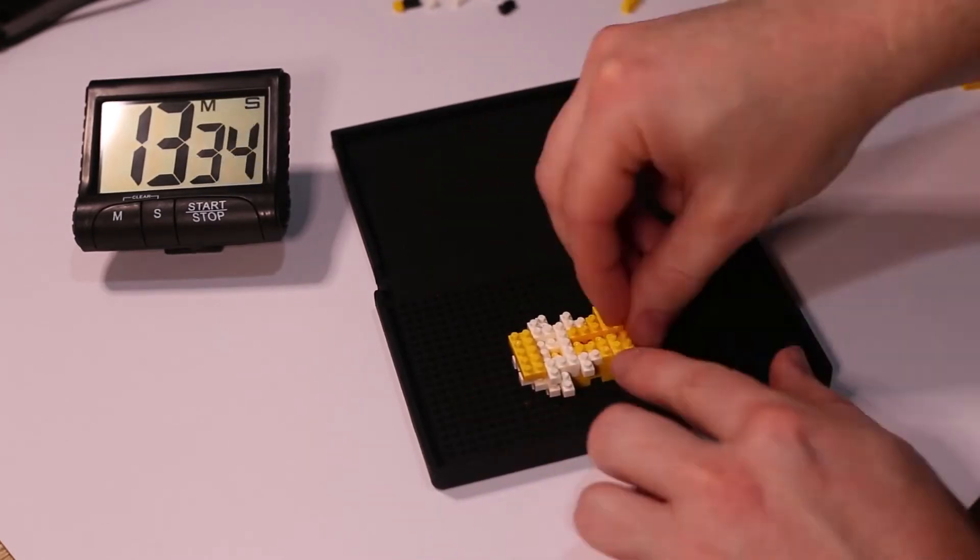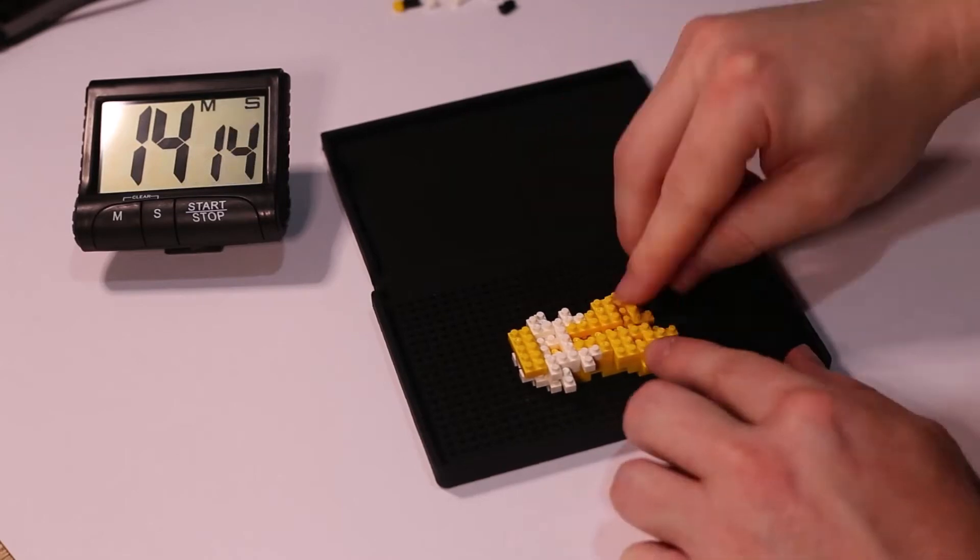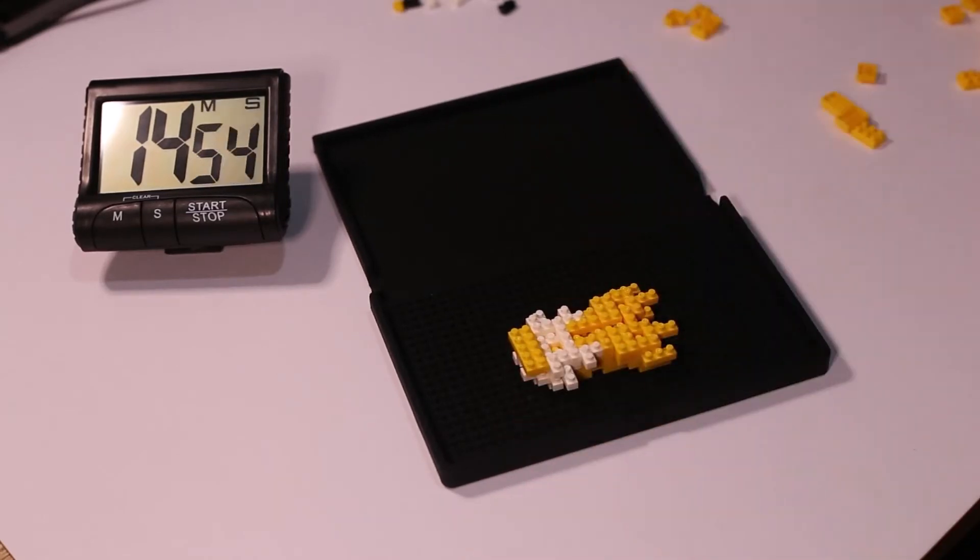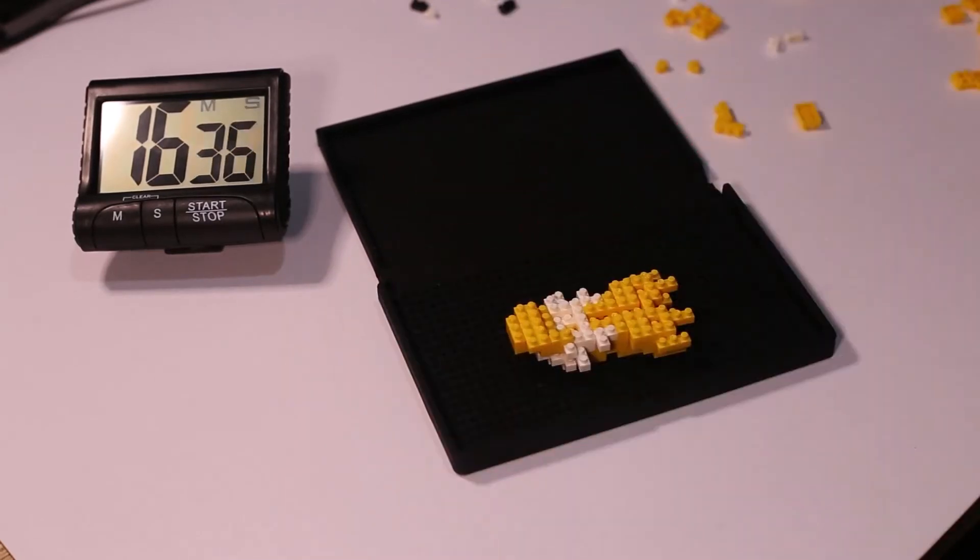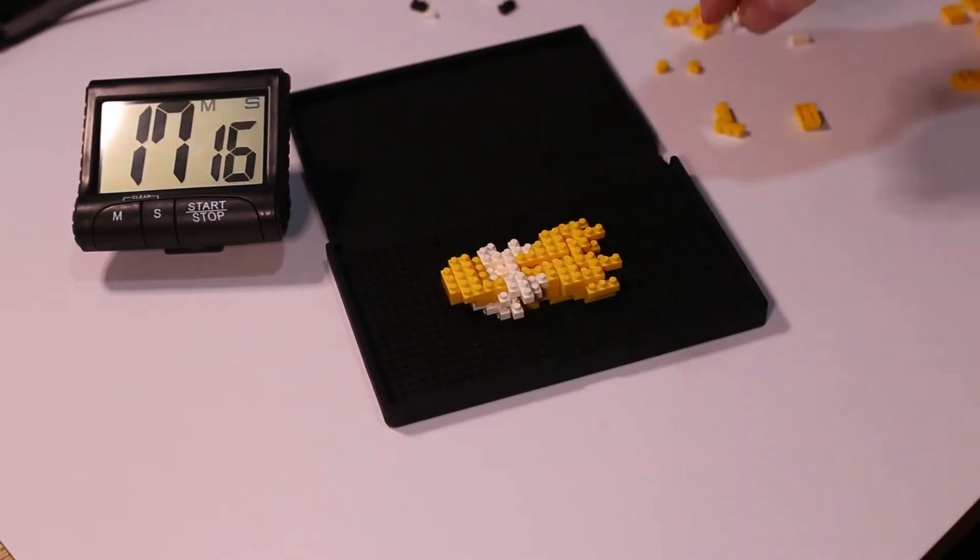Jolteon is one of the Eeveelutions I am most excited to build and I have to say I don't mind this model. It looks the part, it's very different from Vaporeon that I did in my last video. This was a pretty easy model to build.